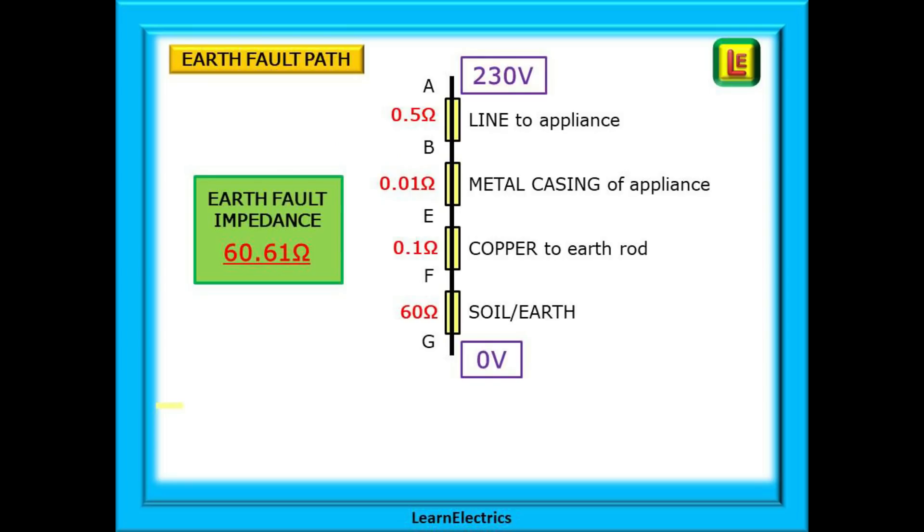We can also look at the drawing as one long string of resistances and I find that this always helps me to understand what is happening during a fault. Starting at the top of the string, we have point A at the transformer with 0.5 ohms of resistance. Then the casing of the appliance, perhaps just a hundredth of an ohm. Next the fault current flows through the copper earth cable to the earth rod and then through the soil itself back to the transformer at G. Add all these resistances together and we have a total of 60.61 ohms in our example. Look at this string of resistances. Where is the greatest volts drop going to be? At point F, at the earth rod.